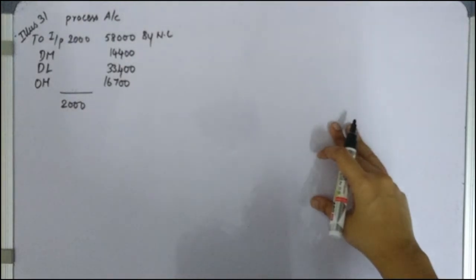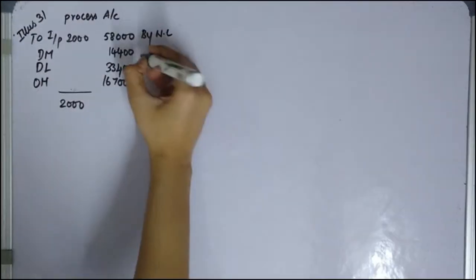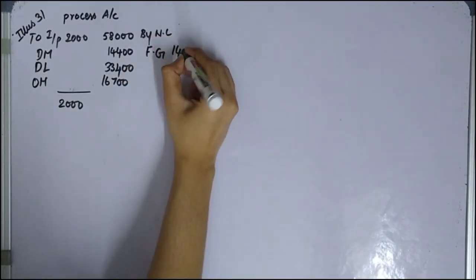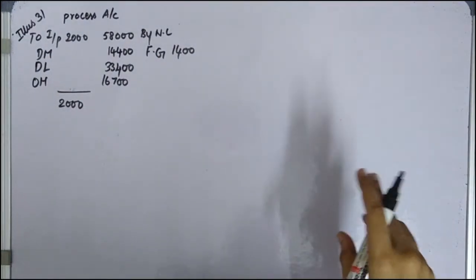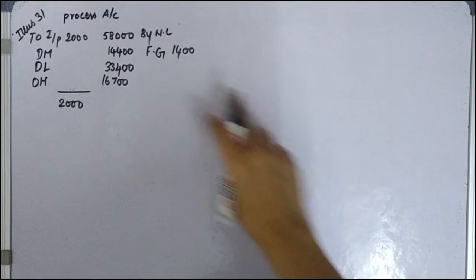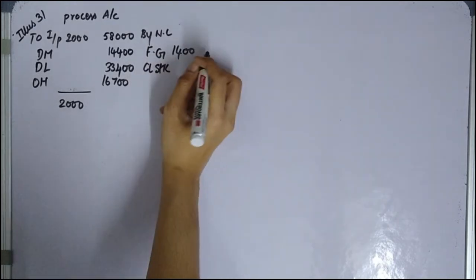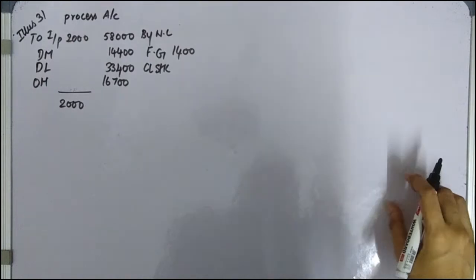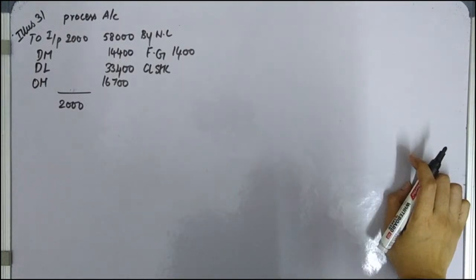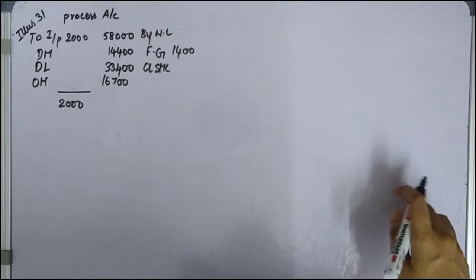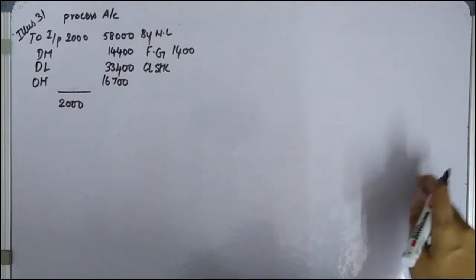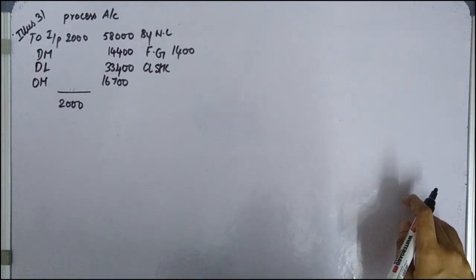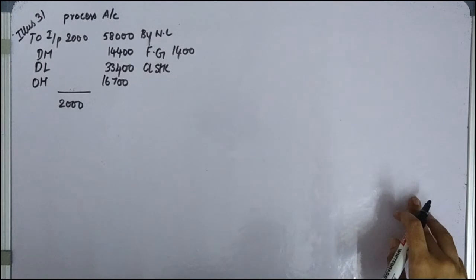At the end of the month, 1,400 units have been produced — that is your finished goods. Closing work in progress — closing stock — that is 460 units incomplete. And 140 units, after passing through the entire process, had been scrapped — so that is your abnormal loss.